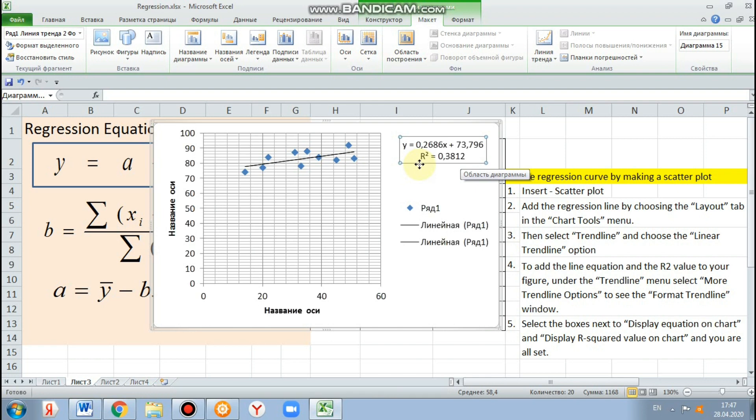0% indicates that the model explains none of the variability of the response data around its mean. 100% indicates that the model explains all the variability of the response data around its mean.